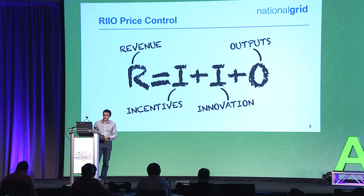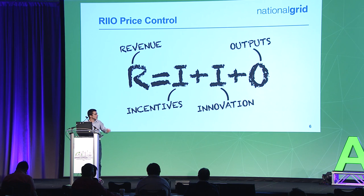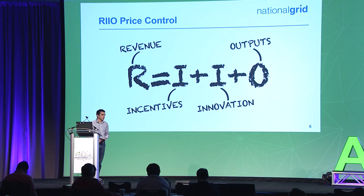Our regulatory framework — our price control — is called RIIO, which stands for Revenue = Incentives, Innovation, and Outputs. Our company's revenue is dependent on those incentives and innovation, which are about financial incentives to do something slightly different, safer, or more reliable. We've got a test bed facility approved last year — a grant from Ofgem to use a decommissioned substation where we can test assets to destruction to see how far we can push them, done in a safe and disconnected environment.